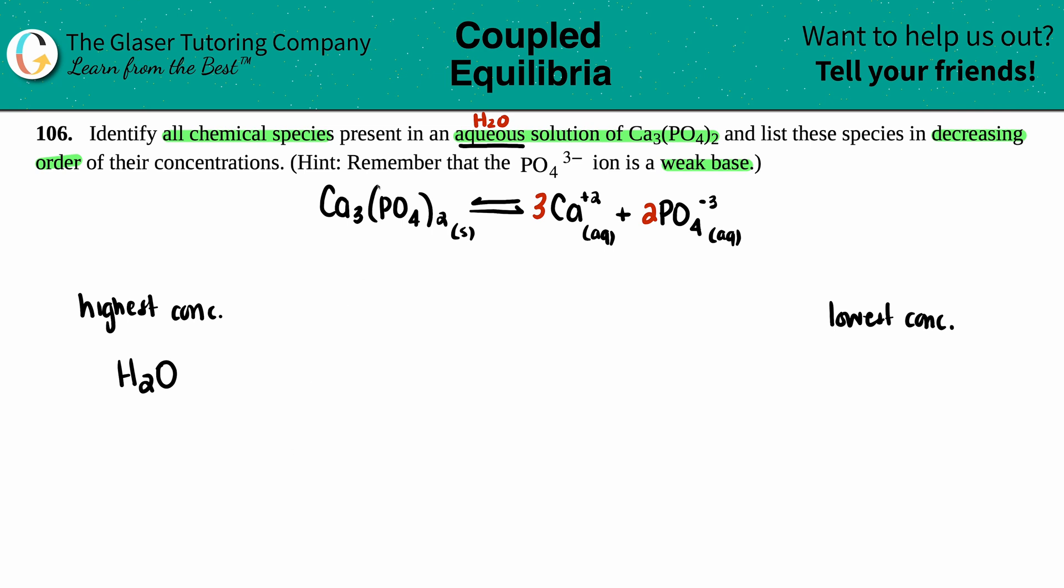Now we can go with this. Technically there are three calciums for every two phosphates and one of these. So according to the ratios, you would have the most of the calcium ion because you have the highest number here. So if it's a 3 to 2 to 1 ratio, that means that you would have the most for calcium, then comes the phosphate, then comes this guy. So we have the highest for H₂O, then comes the Ca²⁺ because it's in the highest ratio of 3, then comes the phosphate ion which is PO₄³⁻.